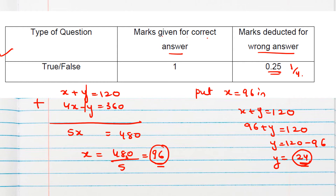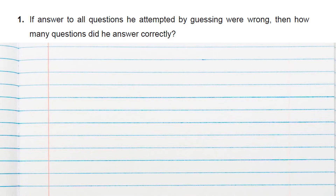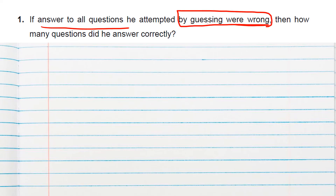Question 1: If all the answers he attempted by guessing were wrong, how many questions did he answer correctly? That means we need to find x — and we already found x equals 96.